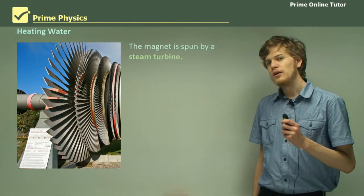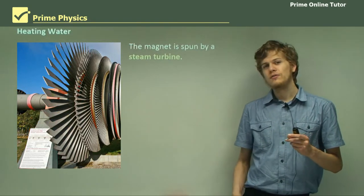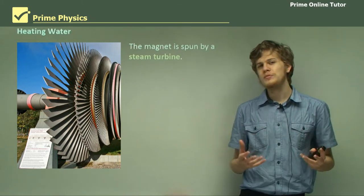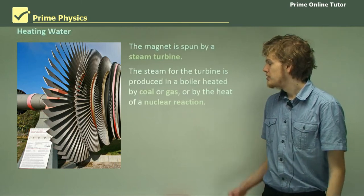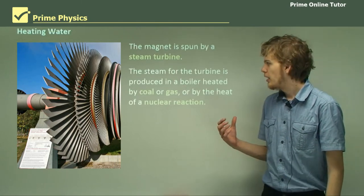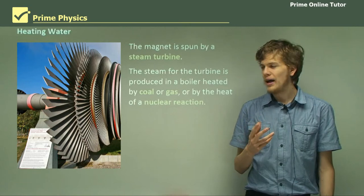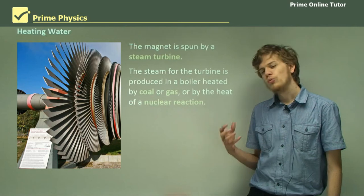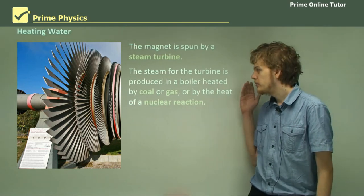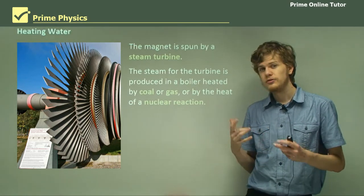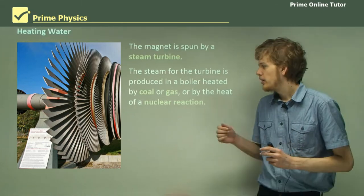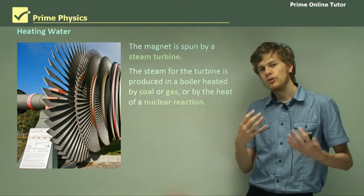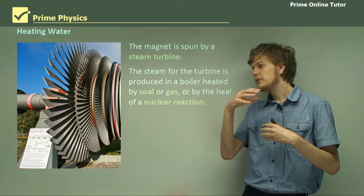The magnet is spun by a turbine. A turbine is a device that spins when air or steam is blown through it. The steam is produced in a boiler heated by coal, oil, or gas, or by the heat of a nuclear reactor. The steam produced, moving very fast as it's created, is blown through a turbine, and as it blows across the blades of the turbine, the turbine begins to spin.